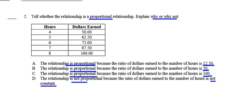Question 2. Tell whether the relationship is a proportional relationship, and explain why or why not. A says the relationship is proportional because the ratio of dollars earned to the number of hours is $12.50. B says the relationship is proportional because the ratio of dollars earned to the number of hours is $50. D says it's not proportional because the ratio of dollars earned to the number of hours is not constant.